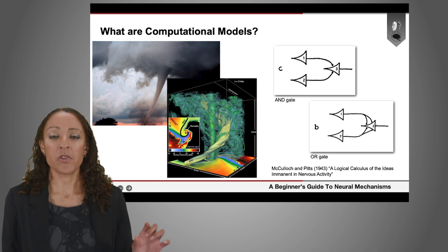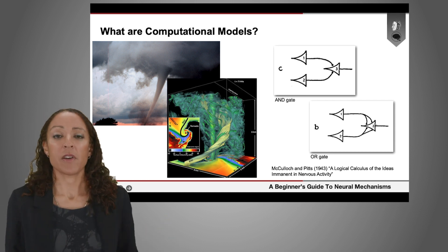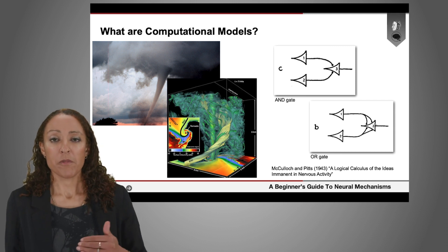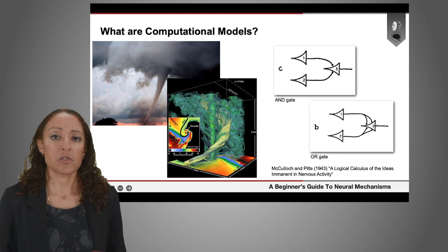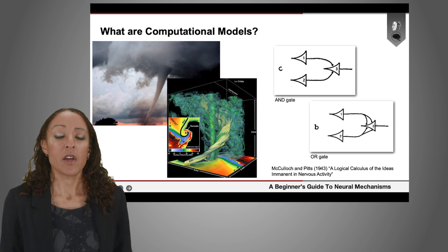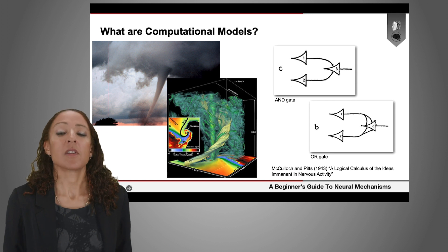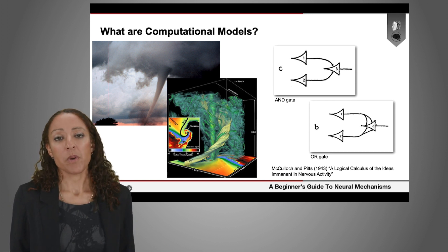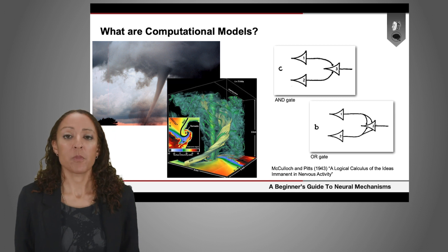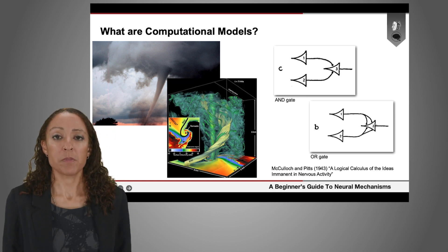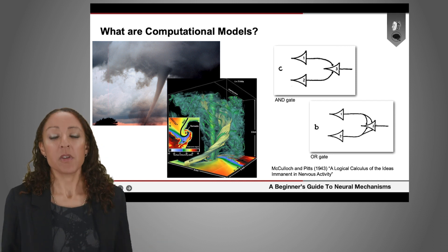causing one neuron next to it to activate and fire more action potentials because of a signal that it's received, that these patterns of connections could be equivalent to logic gates that are found in digital computers. So McCulloch and Pitts' idea was that the brain is full of these mini logic gates that all together form a big computing system,